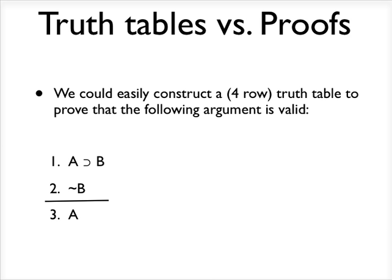So think of this argument I've got right here. We could easily construct a four-row truth table to prove that this is valid. And again, it would be four rows because we only have two atomic components, the A and the B, so that's only going to convert to a four-row truth table, and that's easy enough to construct.